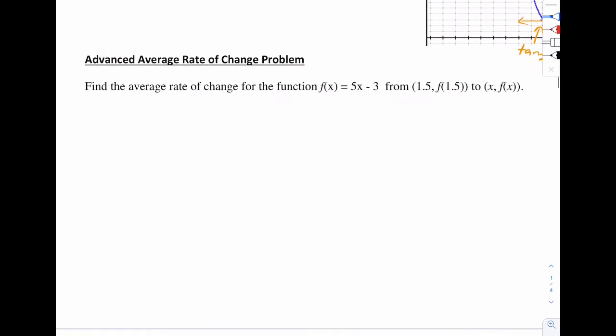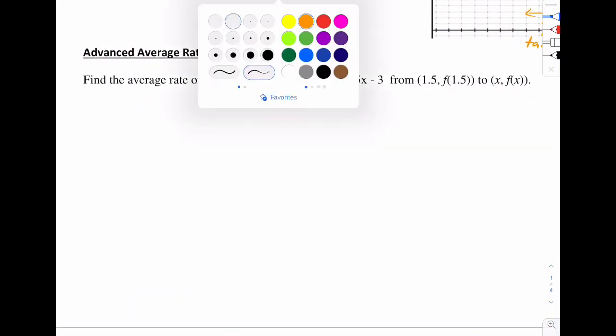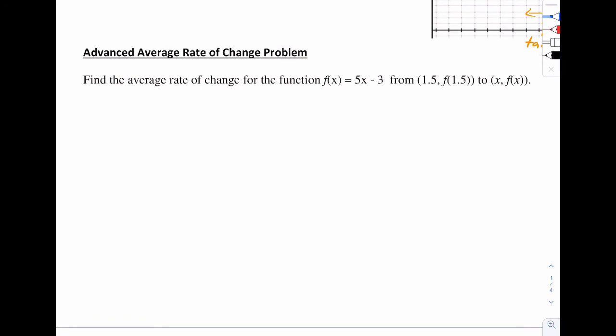Here's the last example, an advanced average rate of change problem. It says find the average rate of change for that function between the following two points. Let's figure out the other part of this right here. We have 3/2 and f of 3/2. Let's actually plug that in. I'm going to get 15/2 minus 3. That's 15/2 minus 6/2. That's 9/2. So the point is going to be 3/2, 9/2.